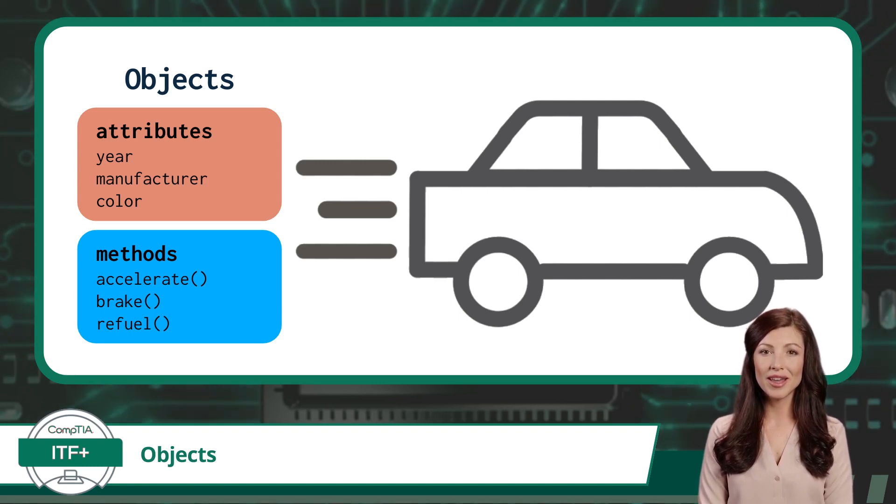Objects help us to organize and manage complexity by grouping related data and functions together. Just like a car has wheels, an engine, and seats, an object has its own characteristics and behaviors.